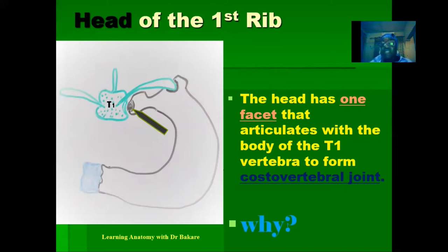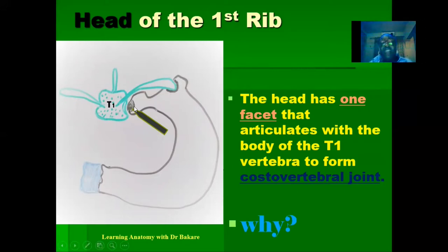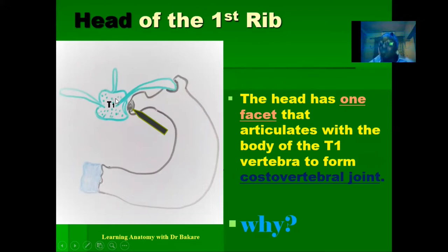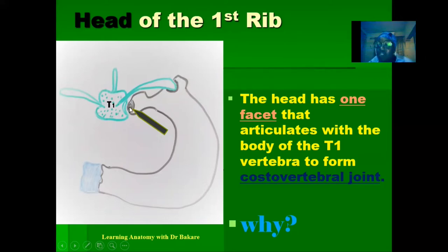To justify why we have one facet: for typical ribs with two facets, the inferior facet connects with the body of the corresponding thoracic vertebra, while the superior facet connects with the body of the thoracic vertebra located superior to it. But since this is the first thoracic vertebra, there is no vertebra above it, so there is no need to create a second facet to connect with a superior thoracic vertebra. That is why the head of the first rib has only one facet.